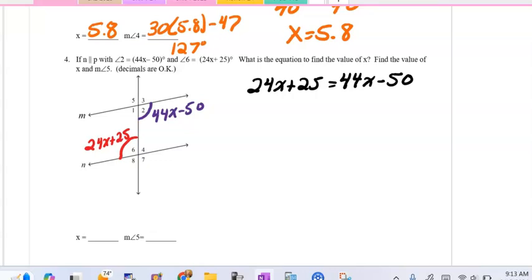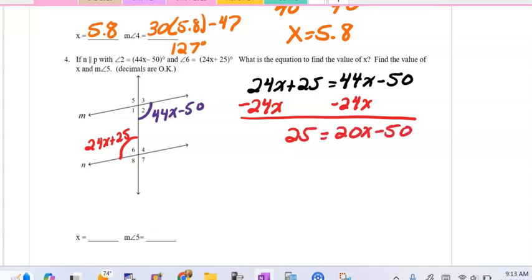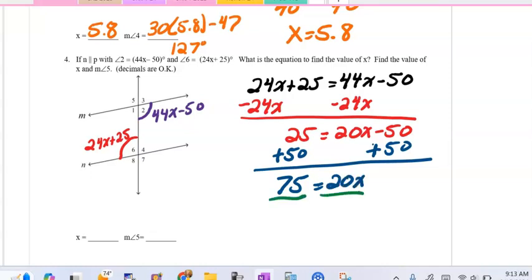First step, I would combine like terms. There are no like terms. So I'm going to subtract 24x from both sides, and we'll get 25 is equal to 20x, take away 50. We'll add 50 to both sides, get 75 is equal to 20x. And then we'll divide both sides by 20.